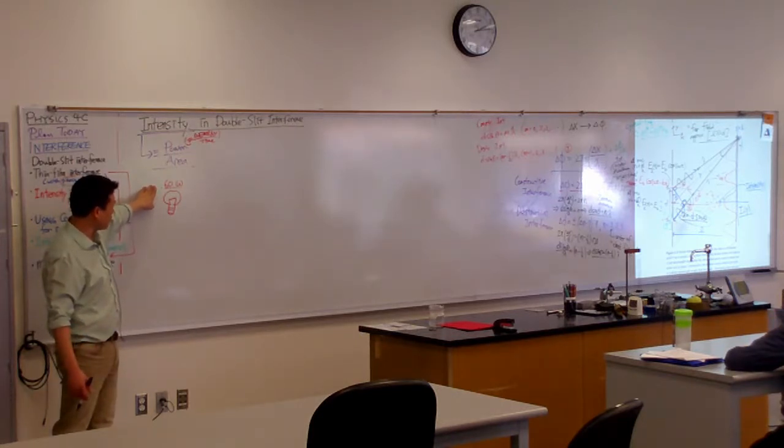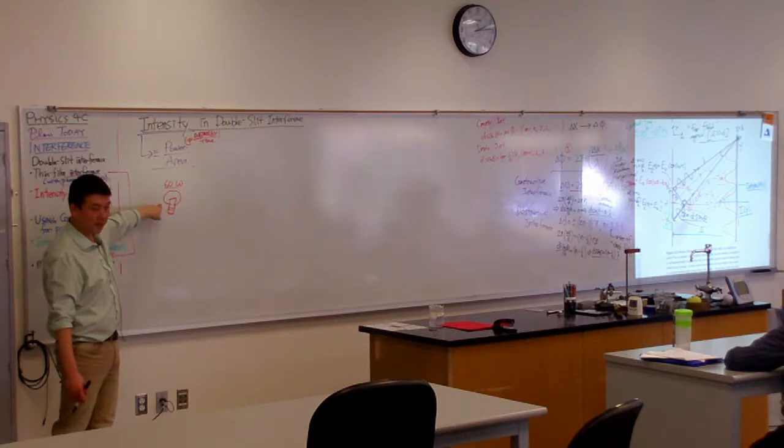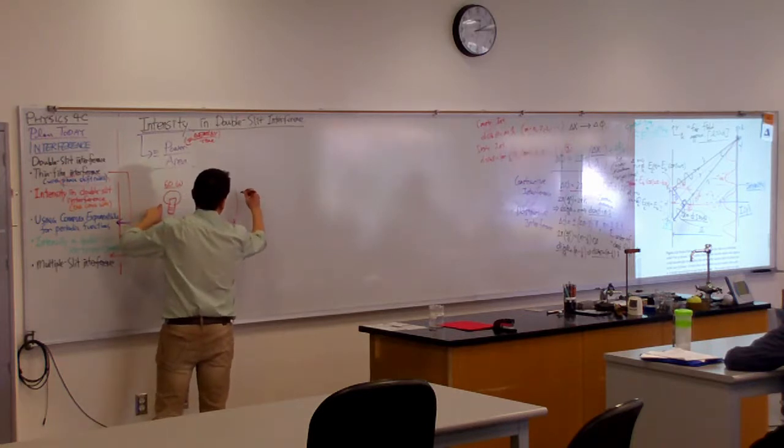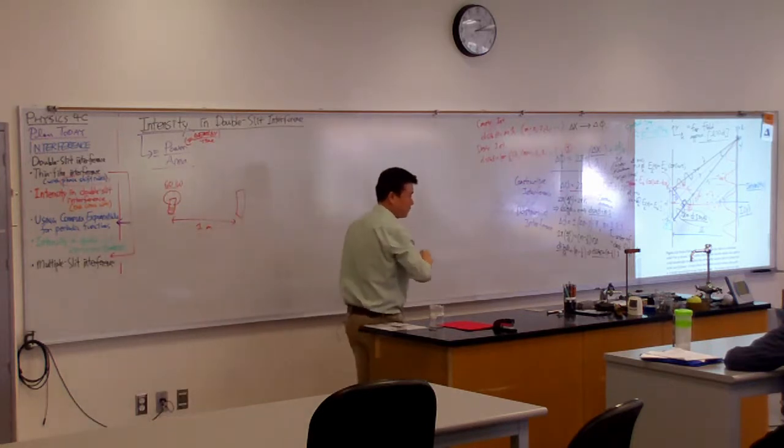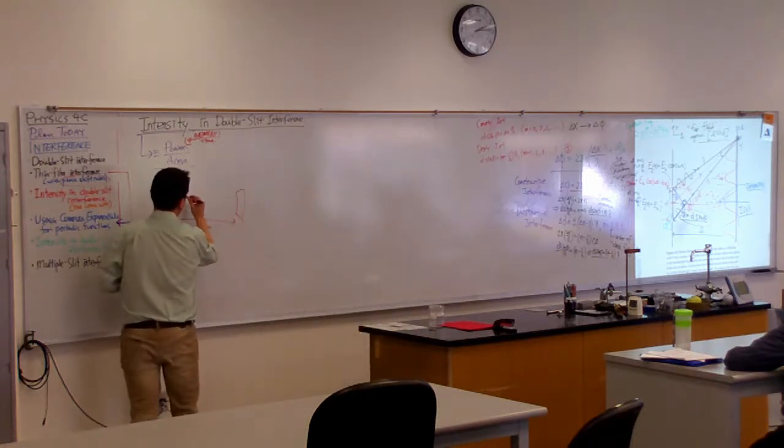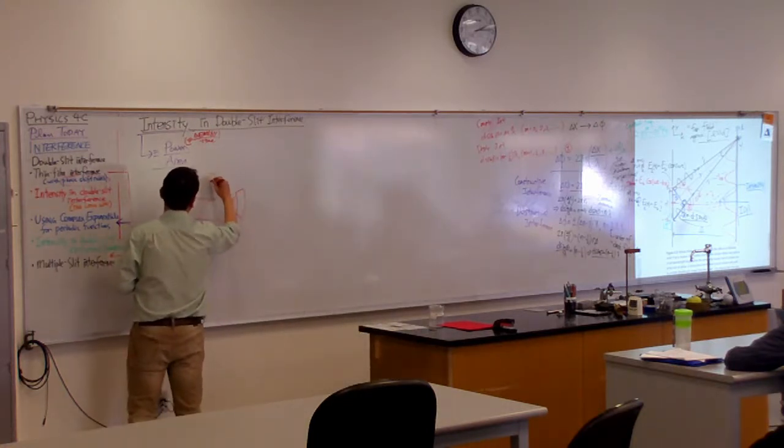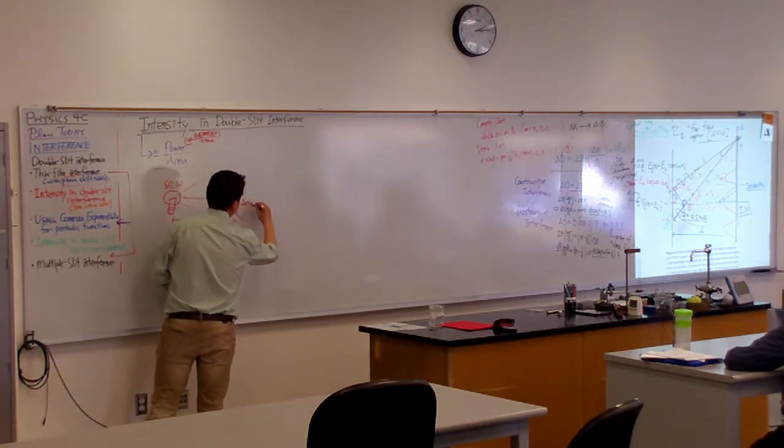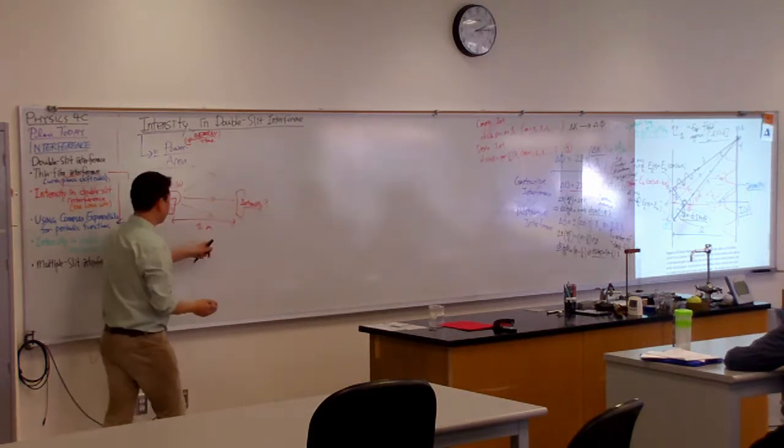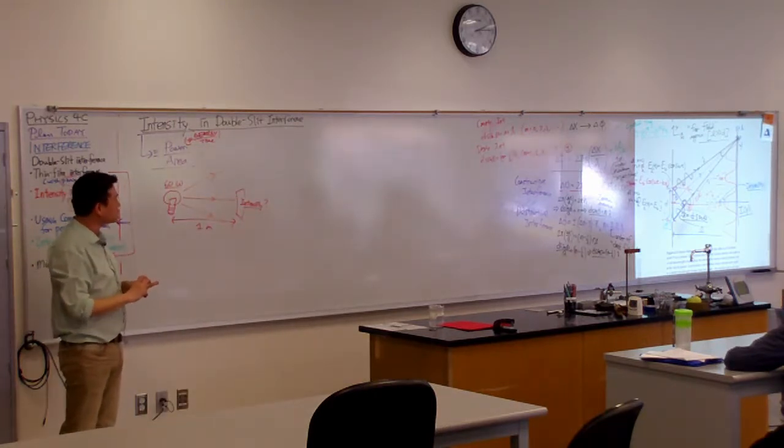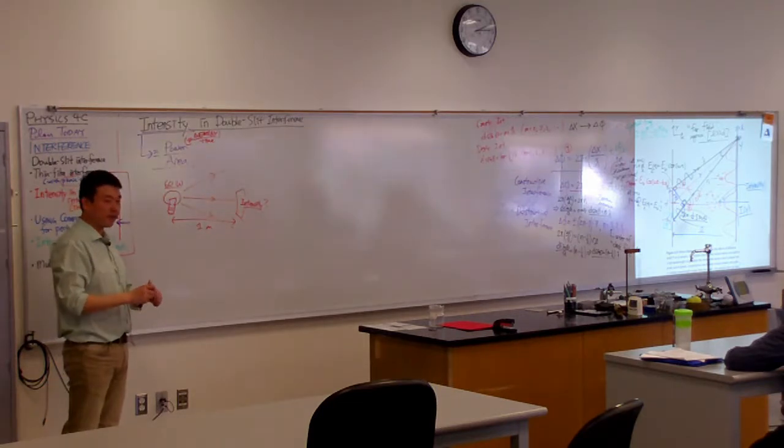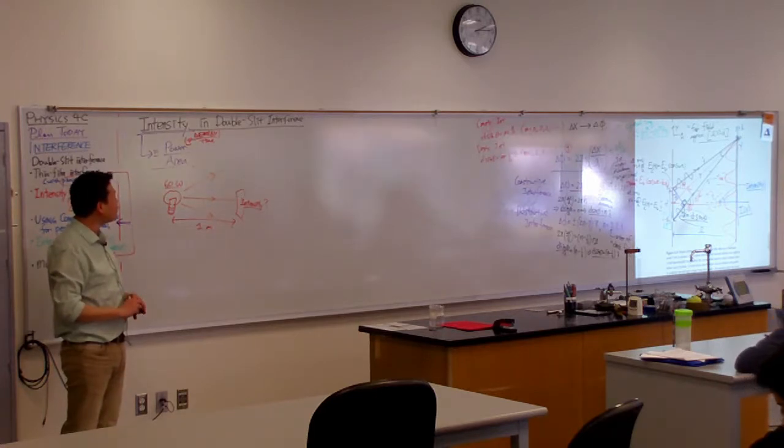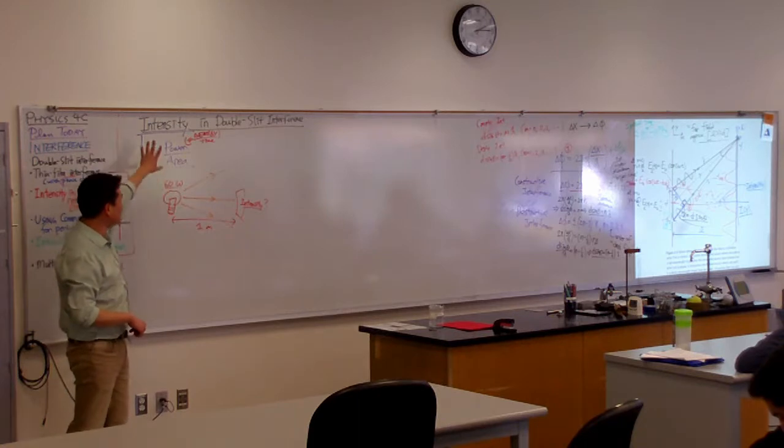Now, supposing somebody asked you for intensity of this light bulb at some distance, I don't know, one meter away. Somebody asked you what is the intensity? At one distance, one meter away. Do you know how you might estimate or calculate that? You could. I want to do it with only the information that's on this board.